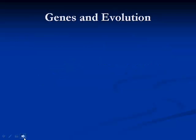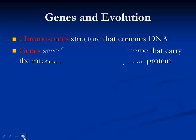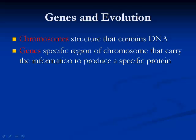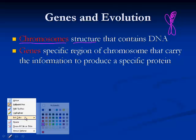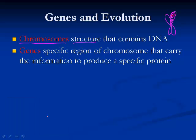So, genes and evolution. We need a little bit of background information. We have these things called chromosomes — the structure that's wound into these little X shapes — and that's what all the DNA is coiled into. On the DNA, we have specific regions on these chromosomes which are called genes.